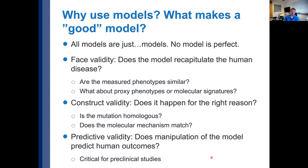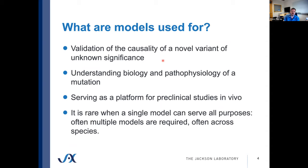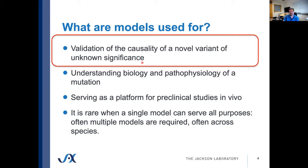Then finally, predictive validity — does manipulation of the model predict human outcomes? This is critical for preclinical studies, perhaps not as important for the group here today. One of the things we clearly care about within this group is validation of the causality of a novel variant, or a gene associated with disease. Models can also be used for understanding biology and serving as a platform for preclinical studies in vivo. It's rare that a model can serve all purposes, and within ClinGen we focus on validating the causality of a gene related to a particular disease.